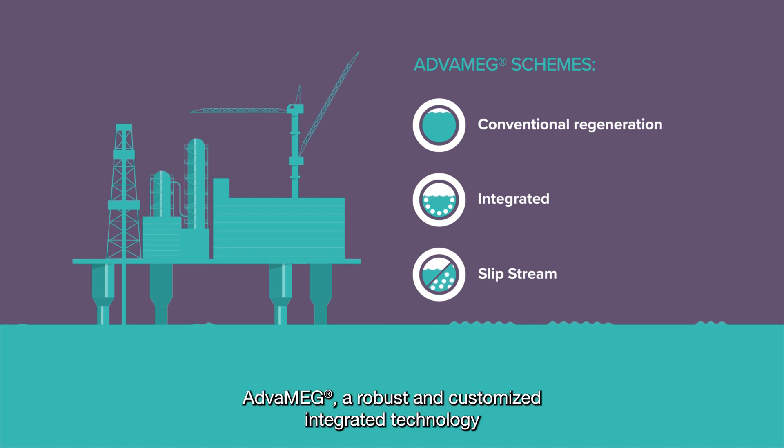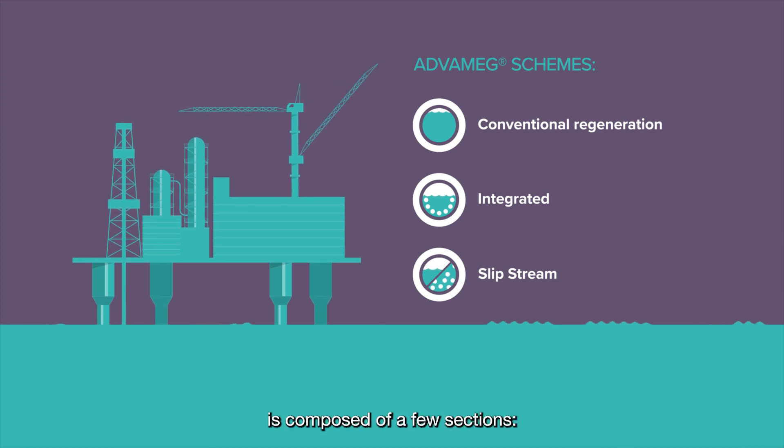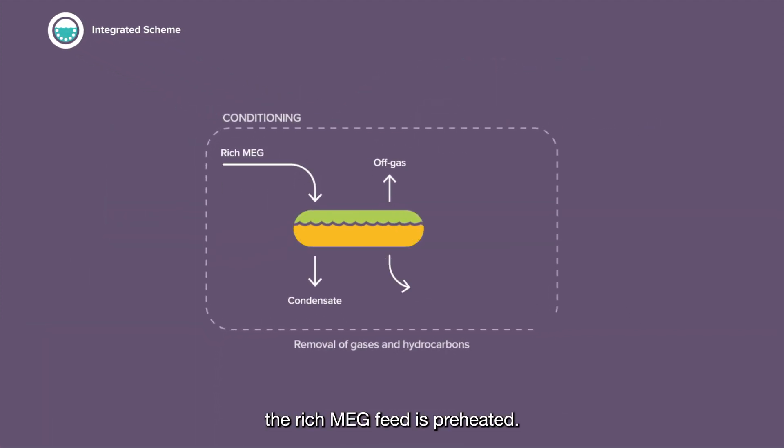ADVA-MEG, a robust and customized integrated technology, is composed of a few sections. In the first section, called conditioning, the rich MEG feed is preheated. Then, entrained gases or hydrocarbons are removed in a triphasic drum.